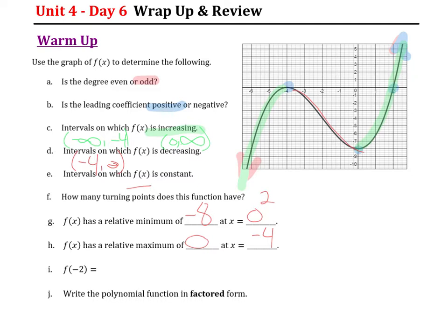Next, f of negative two. So when x is negative two, what's my function value? x is negative two, my function value is negative four. And we want to write this thing in factored form. I'm going to use the x-intercepts to help me. I'm going to have (x + 4) and (x - 2) as my factors. But since x plus four, that was a bounce point, that means this has to have an even multiplicity. So I'll give it a squared: (x + 4)²(x - 2).